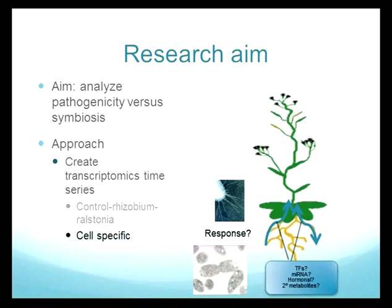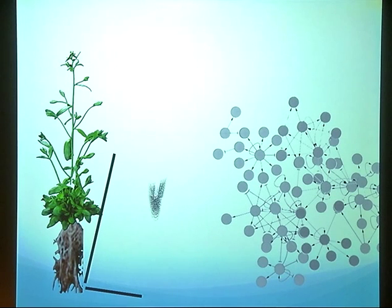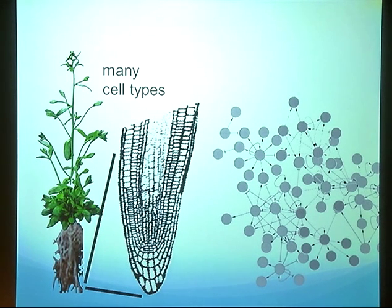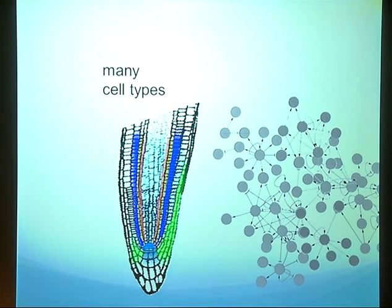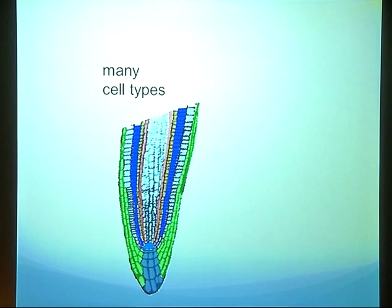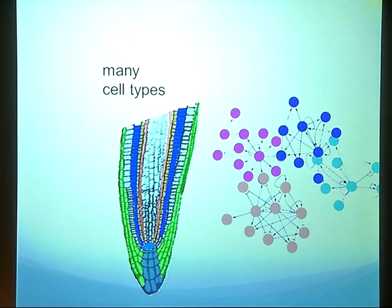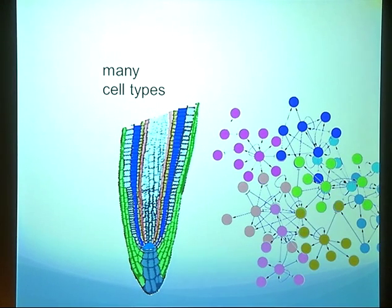We are making our time series in a cell-specific way because we are mostly interested in the early response, and we think it is more relevant to look at specific cell types rather than a whole plant or whole root system. Because plants are composed of many cell types, if we look at specific cell types we think we might get a clearer signal from our transcriptomic series. When we combine the data from several cell types, we will have a nice signaling pathway.